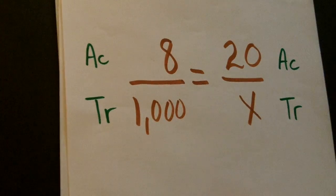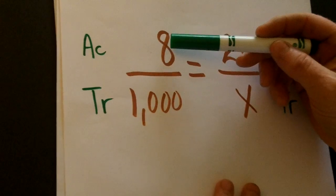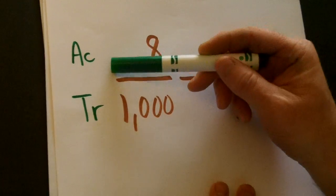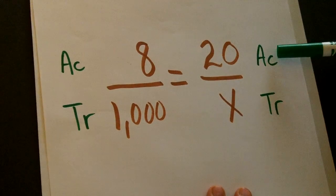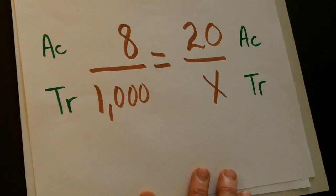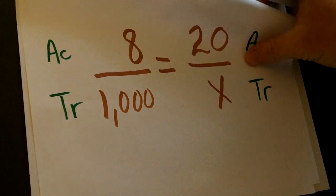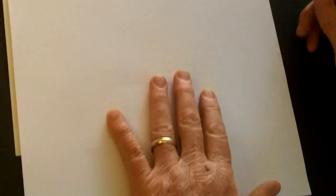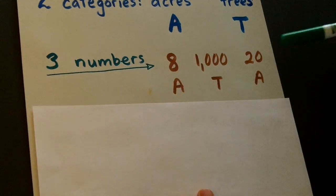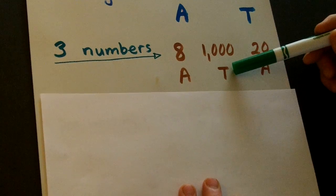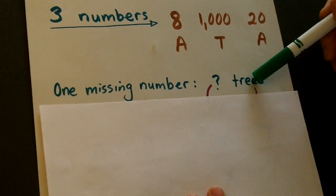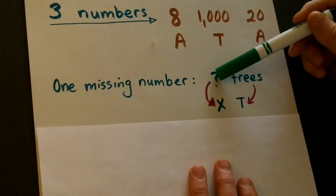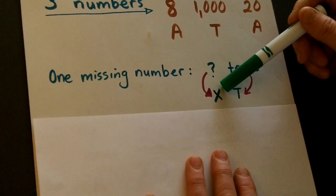We can also say eight acres produces 1,000 trees. 20 acres will produce how many trees? Now, in this problem, we have three numbers. Eight acres, 20 acres, and 1,000 trees. So, we're missing one number, how many trees? Now, how many we put as a variable x.